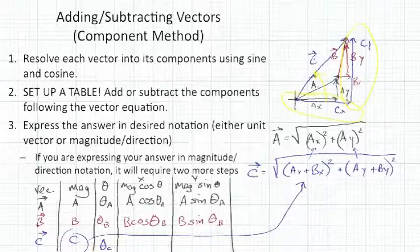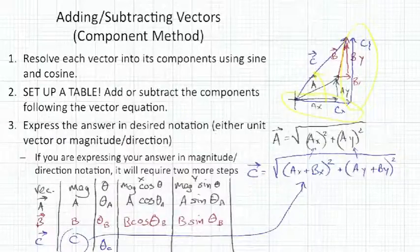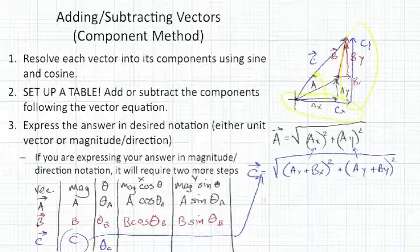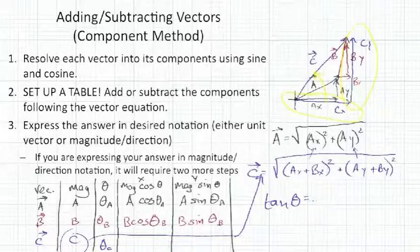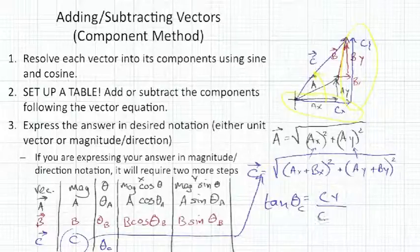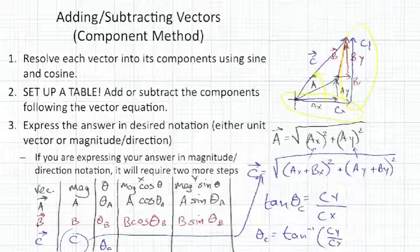We know, regarding this angle, we know the opposite and we know the adjacent. So O and A, that sounds like a tangent function. That means then that the tangent of Theta C equals CY, that is the opposite, over the adjacent, CX. And that means that the angle Theta C is the inverse tangent, tan to the negative one, of CY over CX.